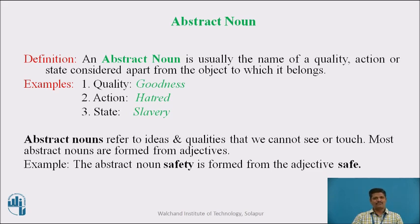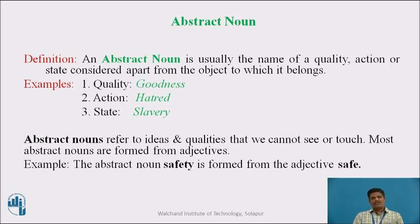Most Abstract Nouns are formed from adjectives. For example, the Abstract Noun 'Safety' is formed from the adjective 'Safe.' In the majority of cases, Abstract Nouns are formed from adjectives.